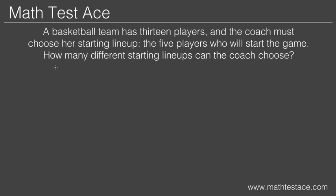The problem is: a basketball team has 13 players, and the coach must choose her starting lineup — the five players who will start the game. How many different starting lineups can the coach choose? In any problem where we have to choose more than one item from a group of items, we start by writing down the number of choices we can make at each step of the process.